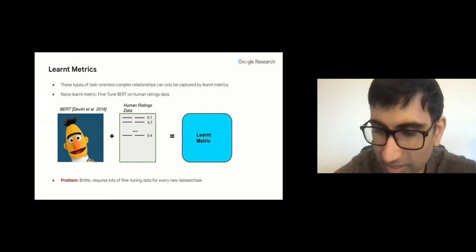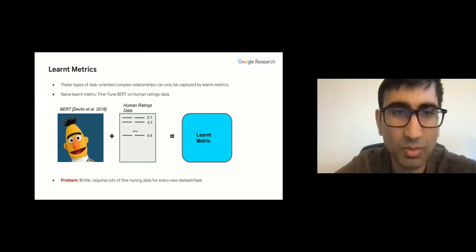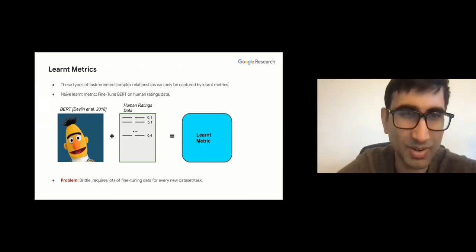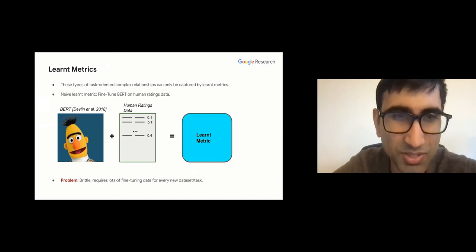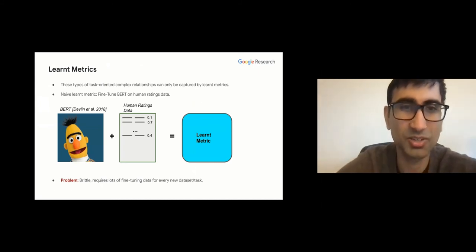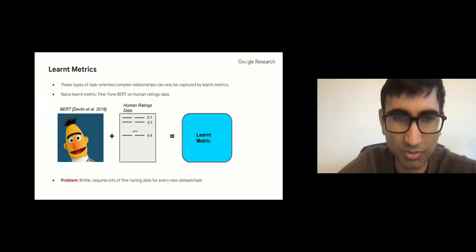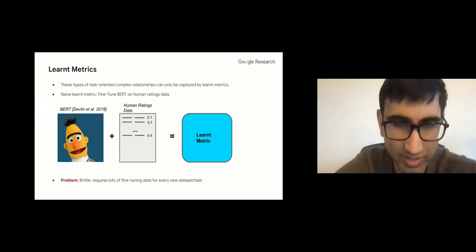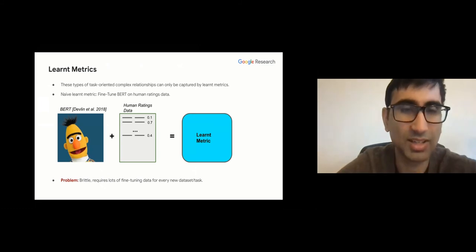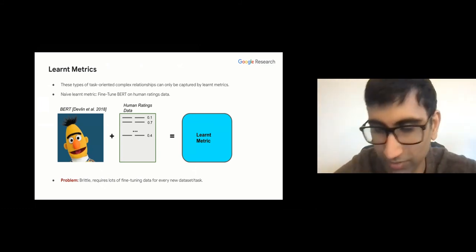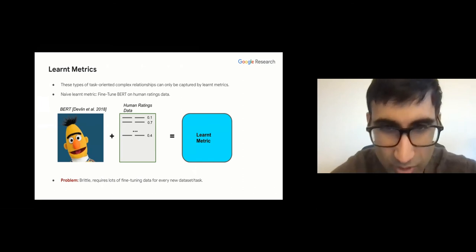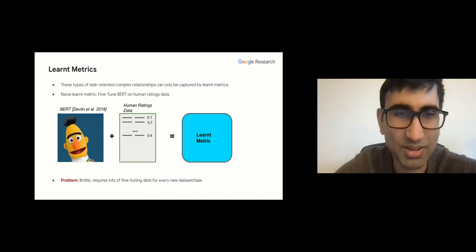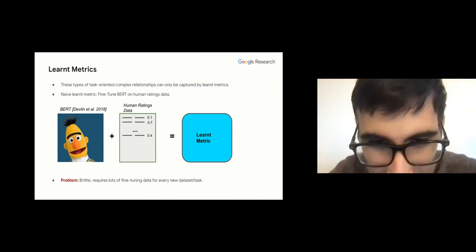What has become exciting is using learned metrics — putting classifiers and metrics on the same playing field. You have human ratings data from annotators evaluating model outputs, then you take a large pre-trained model like BERT, fine-tune it on this human ratings data, and get a learned metric. Now to evaluate your model you'd also be using another model.